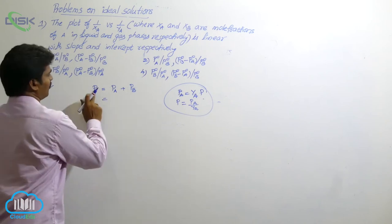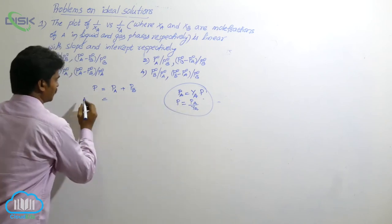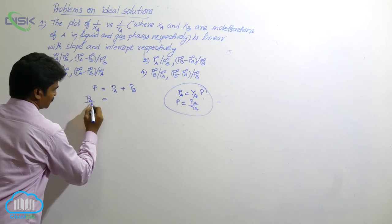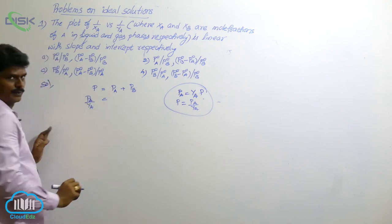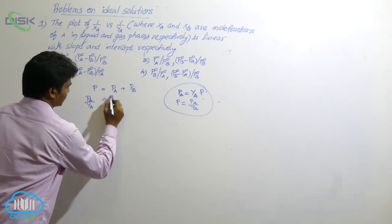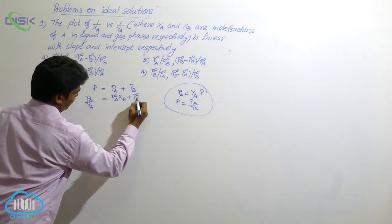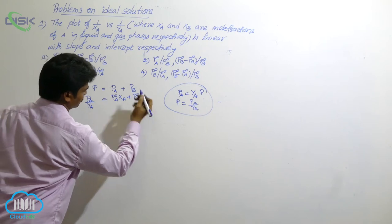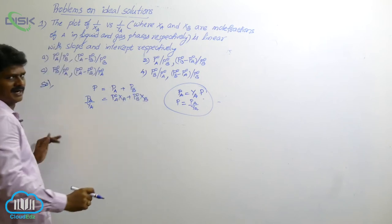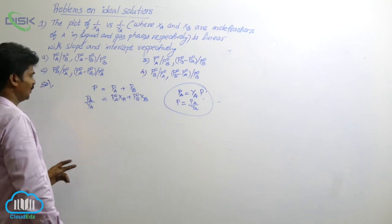So let us expand this. P, how to write? P is equal to PA plus PB. Similarly, that's right. P, how to write? P naught A, XA plus P naught B, XB. Then XA and XB are mole fractions in the liquid phase.